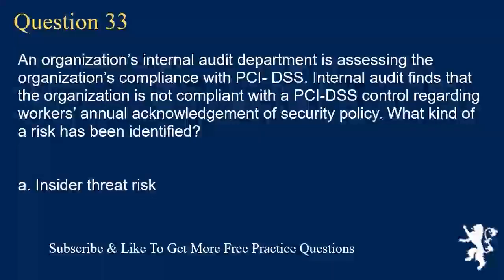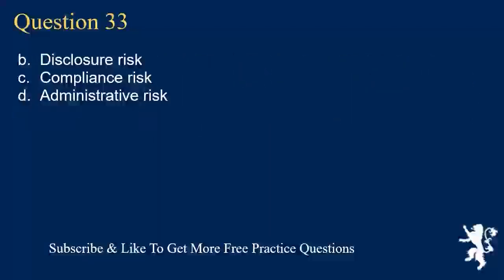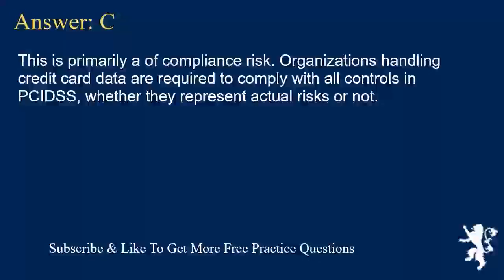Question 33. An organization's internal audit department is assessing the organization's compliance with PCI DSS. Internal audit finds that the organization is not compliant with a PCI DSS control regarding workers' annual acknowledgement of security policy. What kind of risk has been identified? A. Insider threat risk. B. Material disclosure risk. C. Compliance risk. D. Administrative risk. Answer C. This is primarily a compliance risk. Organizations handling credit card data are required to comply with all controls in PCI DSS, whether they represent actual risks or not.